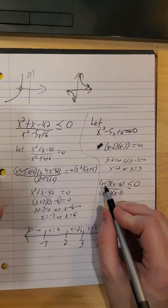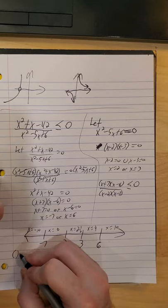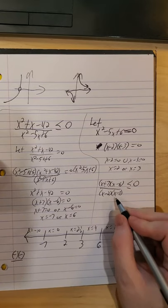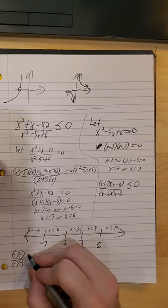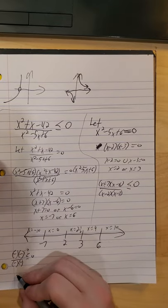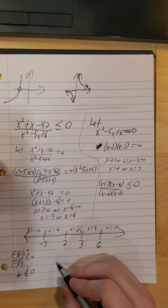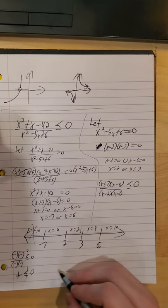So at negative 10, we have two negatives upstairs. Denominator, also two negatives. And we want to know is this less than or equal to 0? Four negatives in a multiplying and dividing problem kicks us over to positive. Positive is not less than or equal to 0. So we throw away that piece of the graph.